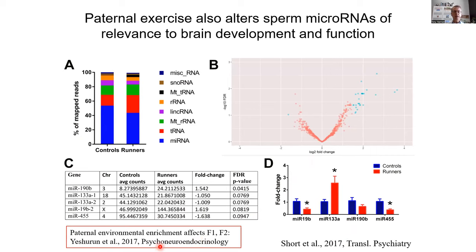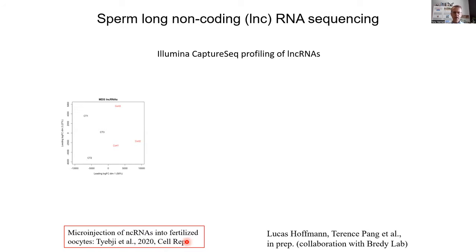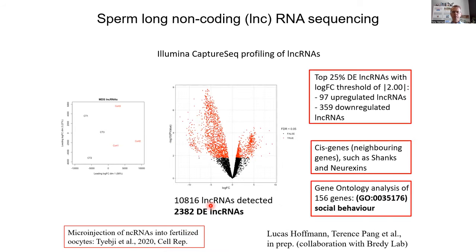In a separate study, Shlomo Yeshurun did environmental enrichment on the fathers. Strikingly, he showed changes with paternal environmental enrichment that affected the F2 grand offspring in very specific ways. In a collaboration with Tim Brady at QBI and UQ, we've now used CAPTCHA-seq to look at long non-coding RNAs in sperm, examining effects of corticosterone or stress hormone and of exercise. There's a whole range of different long non-coding RNAs affected by increased stress hormone, as Lucas Hoffman and Terence Pang found. Lucas has also shown that paternal corticosterone affects not just anxiety in the offspring, but social behaviors — which may be relevant to autism.